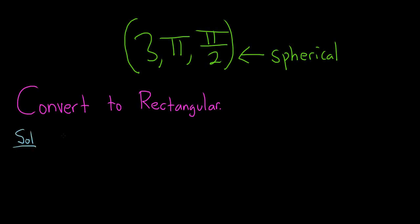So the formulas for converting spherical to rectangular are the following. x is equal to rho sin phi cos theta.